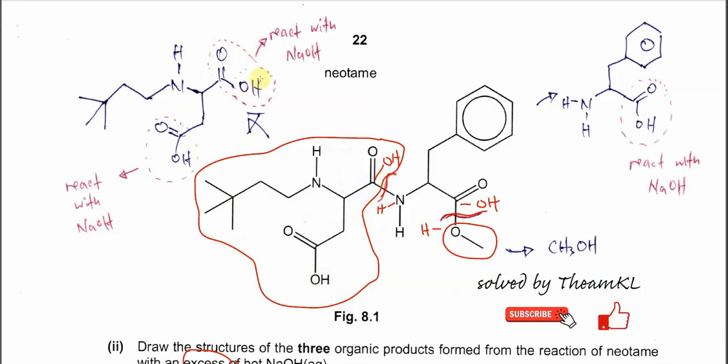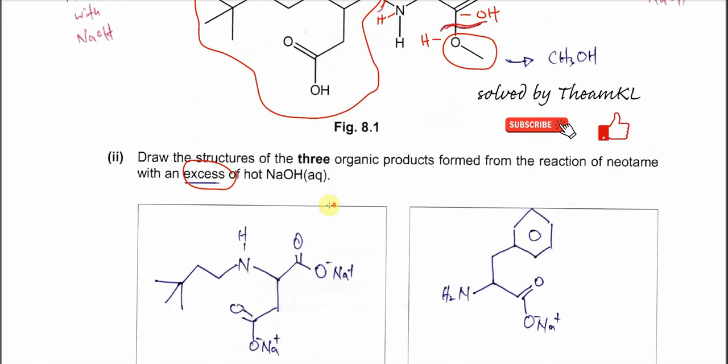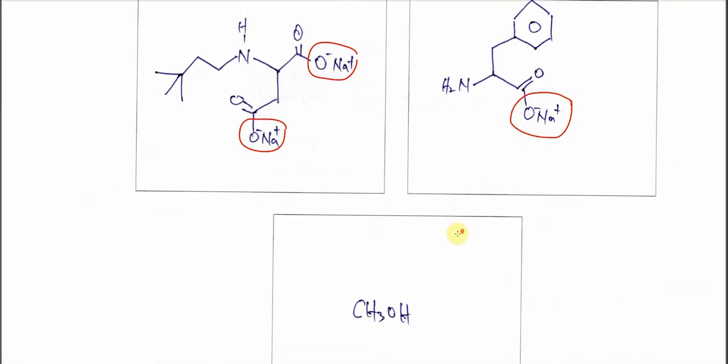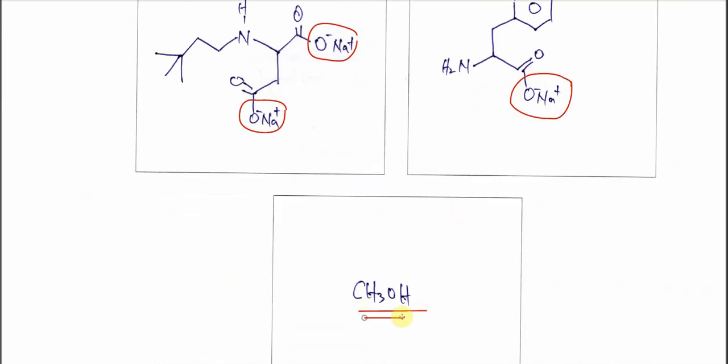This COOH and this COOH will react with sodium hydroxide, and eventually it will form all these products. So there's two salts here and this one will form another salt. And of course, the other product is methanol.